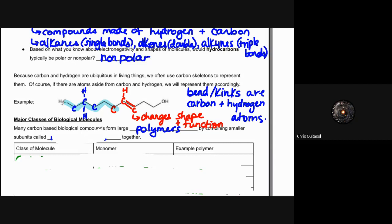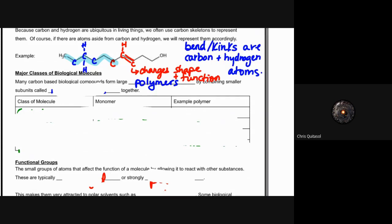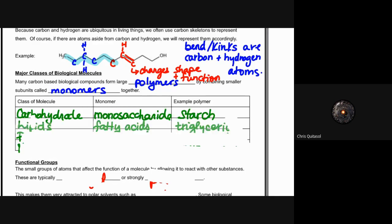Let's take a look at the major classes of biological molecules as they relate to hydrocarbons. These carbon-based biological compounds are what form what we call polymers, combining smaller subunits called monomers together. When we think about those monomers and classes of molecules, there are a couple of important things that come up in grade 12 university biology — those macromolecules we're going to look at tomorrow. But I'll give you a brief overview today.